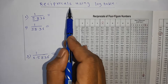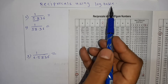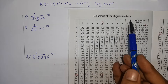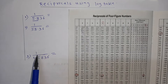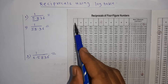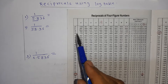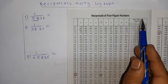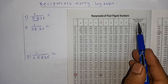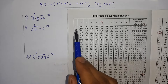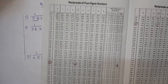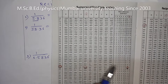Now we'll see how to find reciprocals using a log table. You can see reciprocal of four-figure numbers — these are the three examples we are discussing. More about the reciprocal table: you can see the first two digits in this column, the third digit in this column, and the fourth digit in the mean difference column. Remember, in the reciprocal table, mean difference has to be subtracted. The reciprocal table goes from one to a maximum of 9.9.